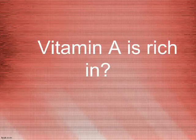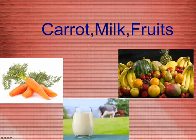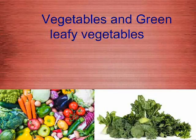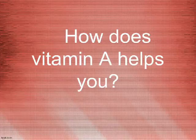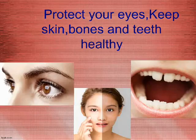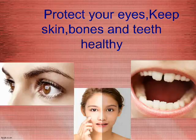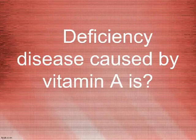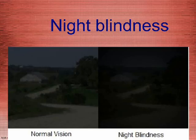Vitamin A is rich in carrot, milk, fruits, vegetables, and green leafy vegetables. How does vitamin A help you? It protects your eyes and keeps skin, bones, and teeth healthy. The deficiency disease caused by vitamin A is night blindness.